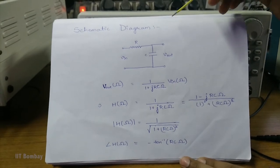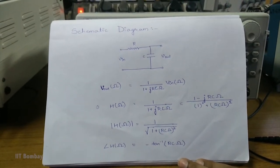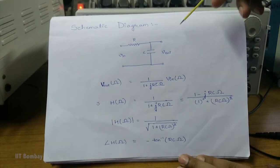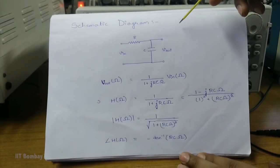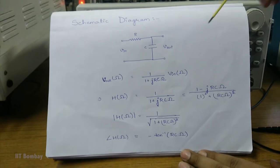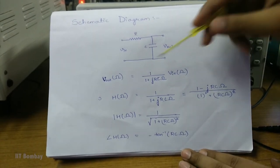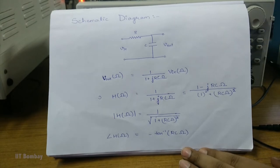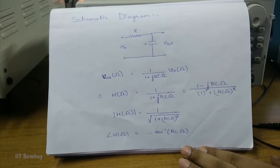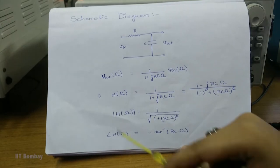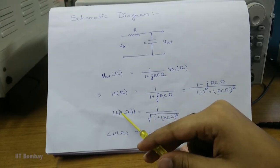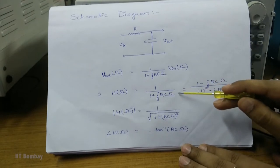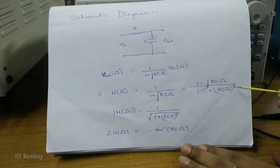Here is the schematic diagram of the apparatus that we are going to use today. It's a simple RC circuit and the output is the voltage observed across the capacitor. The input and the output voltage are related by this equation. We know that the transfer function is the ratio of the output voltage to the input voltage, denoted by H of Omega. Here H of Omega is 1 upon 1 plus j·RC·Omega, which can be further simplified into this form.